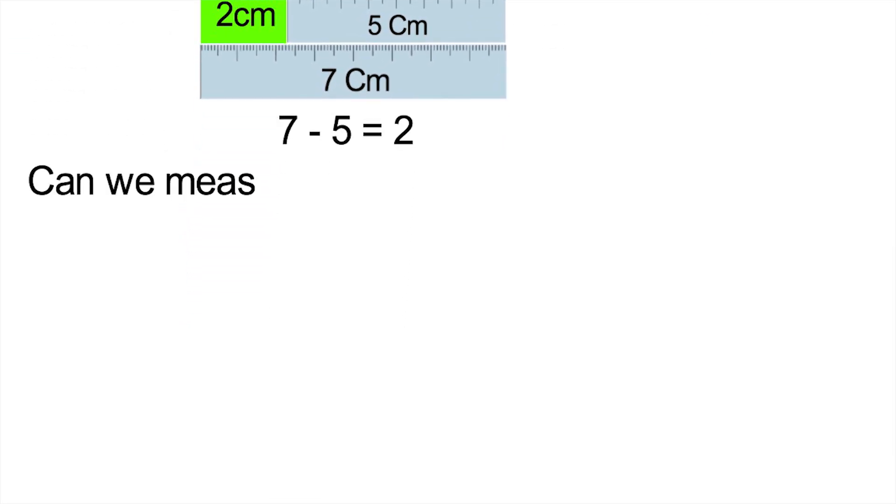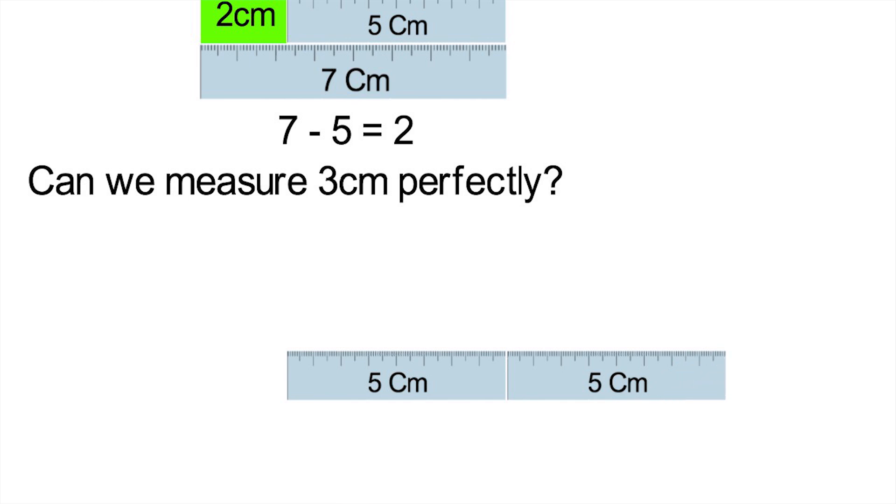The next question is, could we measure 3 centimeters perfectly? After a little thought, you should see we can lay down two 5 centimeter rulers, and then a 7 on top of that with the ends lined up. The distance from the beginning of the first 5 to the beginning of the 7 would then be 3 centimeters. Again, the formula would be 2 of the 5 centimeter rulers minus 1 of the 7s gives us 3.